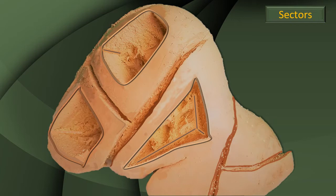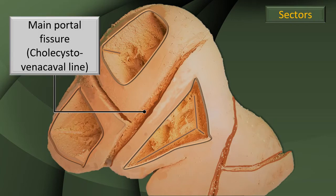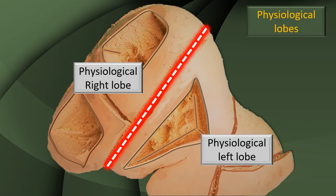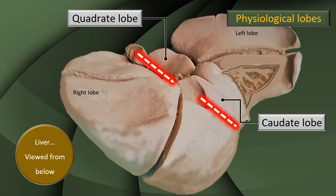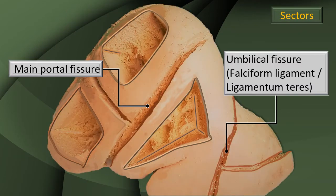We will recall this slide from the previous video. We have already identified the main portal fissure. Based on that, we reclassified what we knew as anatomical lobes into a physiological right lobe and a physiological left lobe. On the inferior surface, we tried to map where the quadrate and caudate lobes belong. It is very obvious that these two, along with the left lobe, are components of the physiological left lobe. The main portal fissure is clearly seen.